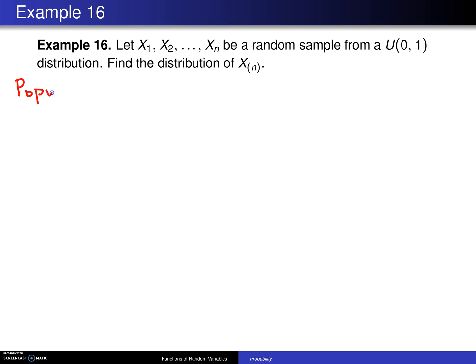In this particular case, the population distribution, which is the uniform 0,1 distribution, has a probability density function f of x is 1 for x values between 0 and 1.